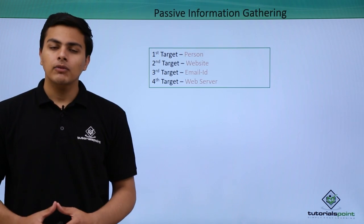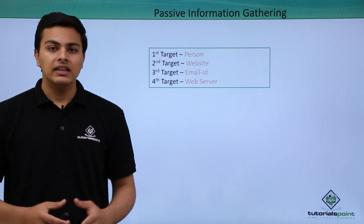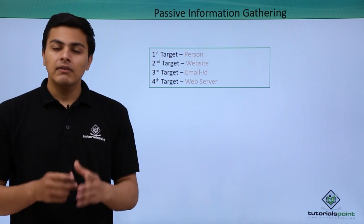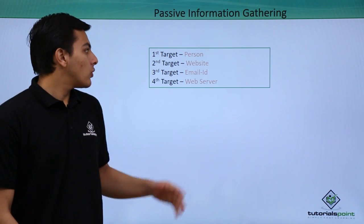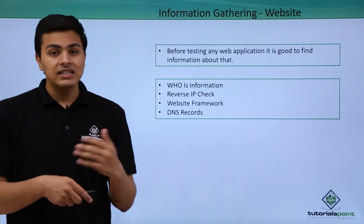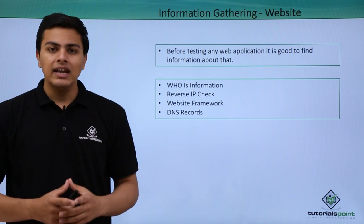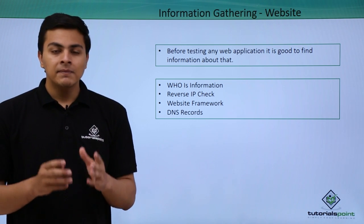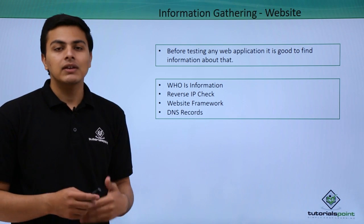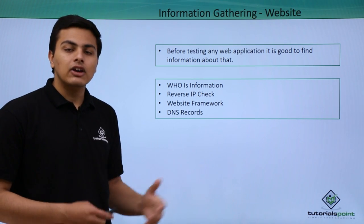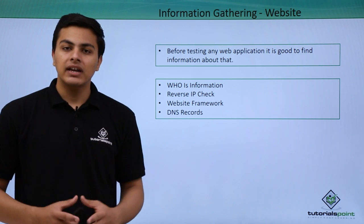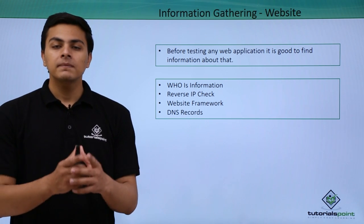Our target could be anything — a website, email address, web server, or a person. If our target is a website, then before testing it to find vulnerabilities, we can gather interesting information about that website. That information might include WHOIS registrar information, DNS records, the platform or framework the website is built on, and we can also do a reverse IP check to find what other websites are hosted on the same web server.